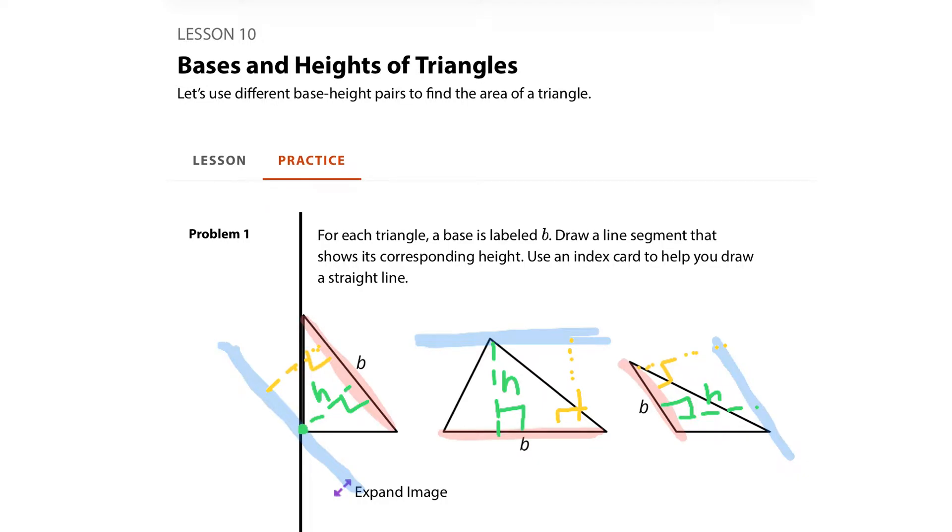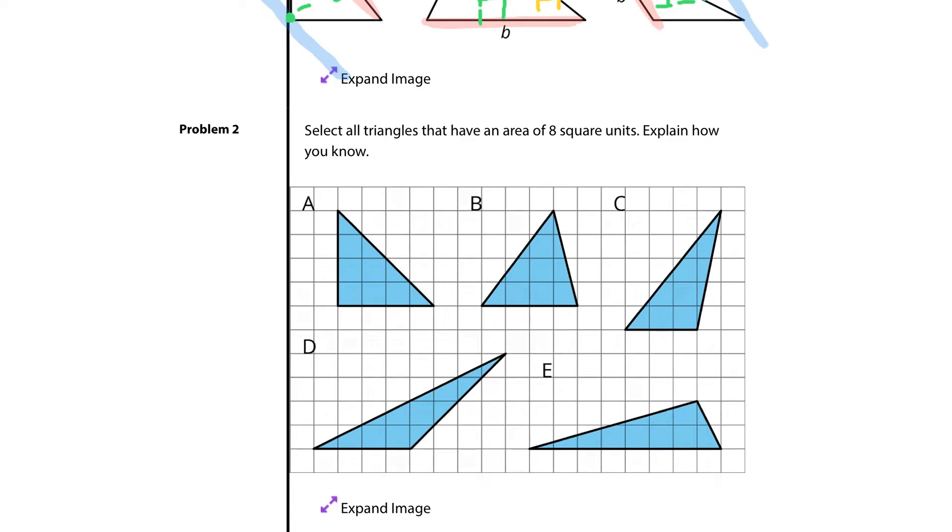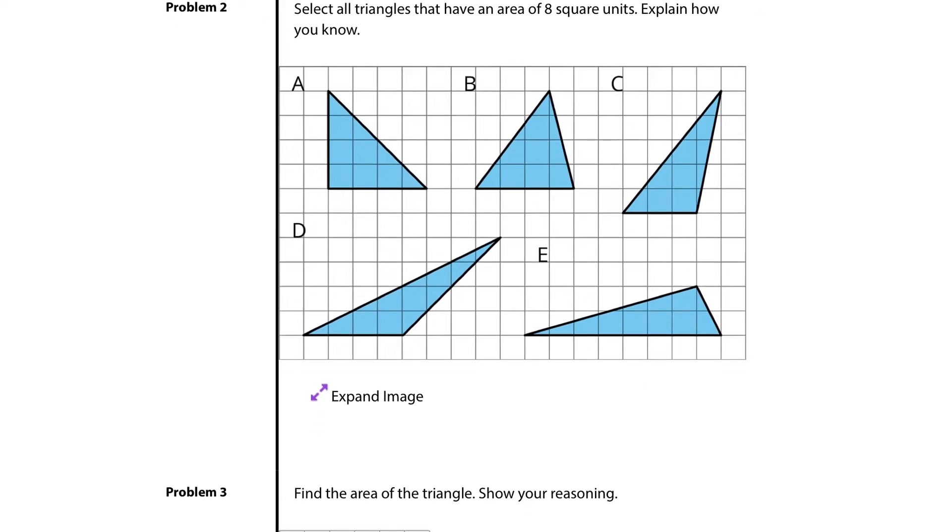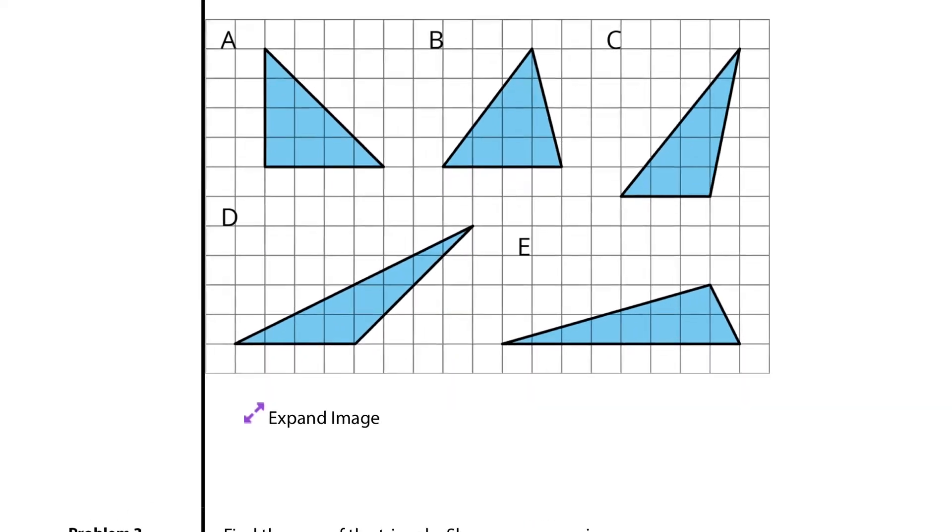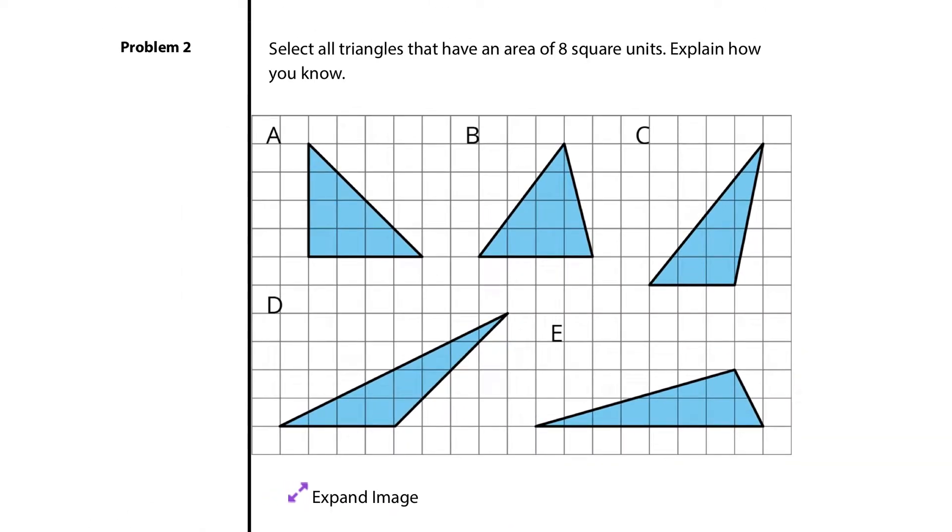Let's look at question 2. Select all triangles that have an area of 8 square units. Explain how you know. Well, let's find the areas.